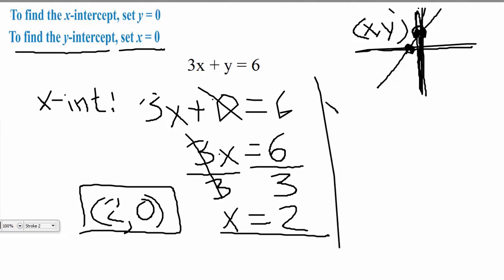So, doing the same thing, but we're going to now find the y-intercept, our rule says that in order to find the y-intercept, we're setting x equal to 0. So what we're going to do is we're going to take the same equation, 3x plus y is equal to 6, but now we're going to be plugging in 0 for x. So when we do that, it's going to look something like this.